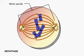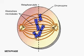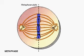At metaphase, the mitotic spindle is fully formed, and the microtubules attached to kinetochores move the chromosomes to the metaphase plate, an imaginary plane equidistant from the poles.